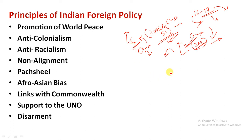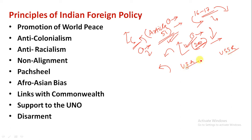Non-alignment is a very important principle. In 1947, when India gained independence, the world was divided into two blocks — the capitalist block led by the USA and the communist block led by the USSR. India looked at this situation and decided not to join either, because India is not strongly idealized toward either side. So India adopted the policy of non-alignment, which became a major policy.